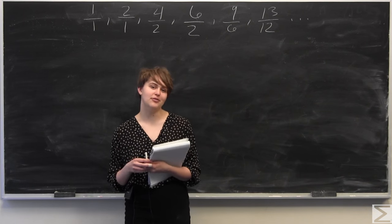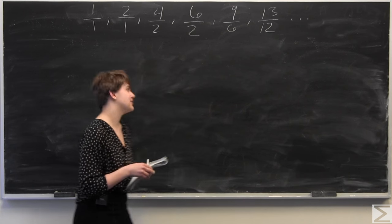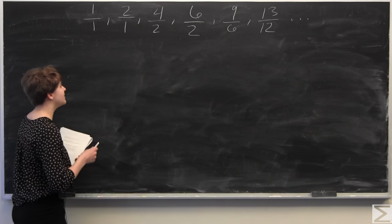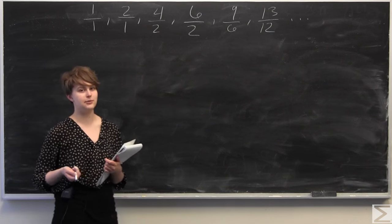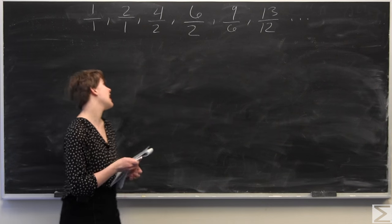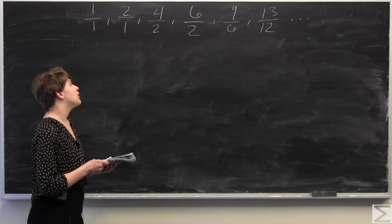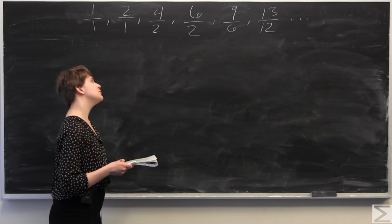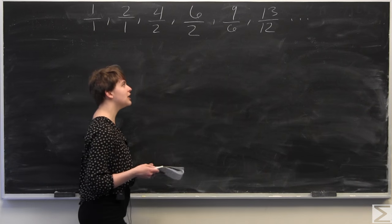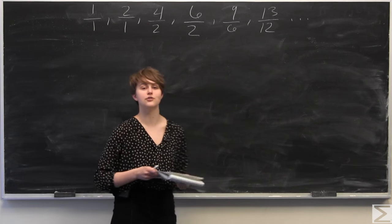This week's Advanced Knowledge Problem of the Week asks you to identify the next number in the sequence of given numbers, where we have 1/1, 2/1, 4/2, 6/2, 9/6, and 13/12.